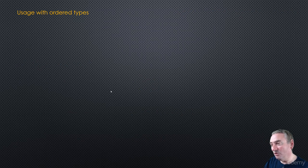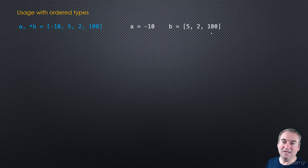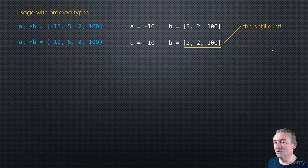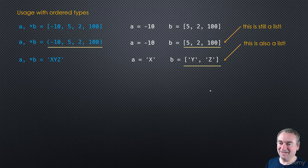Let's look at usage with ordered types. If we write A, *B = [-10, 5, 2, 100], we end up with -10 in A, and B is a list containing the remaining elements. It also works with a tuple — we still get -10 in A and [5, 2, 100] in B. Notice that B is always a list, even when the source was a tuple — the star operator always unpacks into a list type.